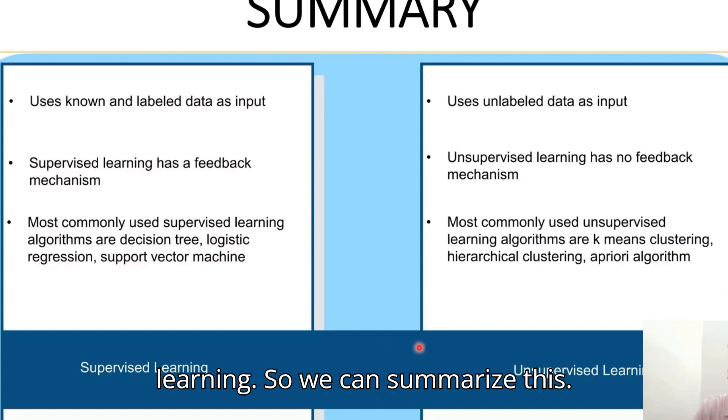To summarize, supervised learning uses labeled data, unsupervised uses unlabeled data. Supervised has a feedback mechanism, but unsupervised doesn't have any feedback mechanism. Common algorithms in supervised learning are decision tree, logistic regression, and support vector machine. In unsupervised learning, we use k-means clustering, hierarchical clustering, and apriori algorithm.